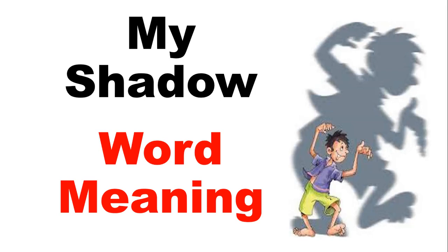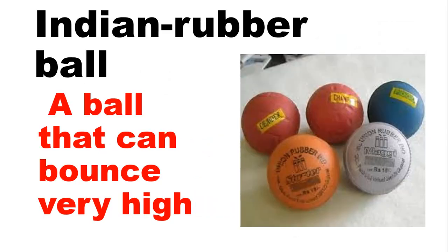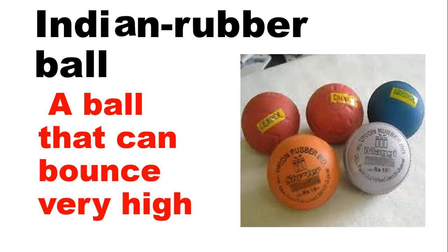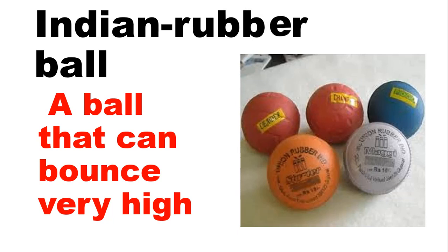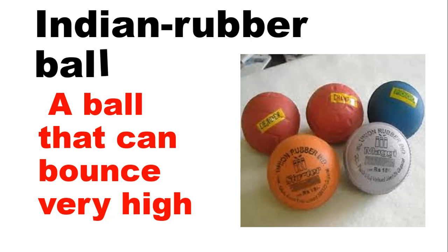So students, let's begin. Our first word is 'Indian rubber ball'. Now it's time to learn the spelling. Second time you will also repeat with me. Let's start: I, N, D, I, A, N — Indian. R, U, double B, E, R — Rubber. B, A, double L — Ball.